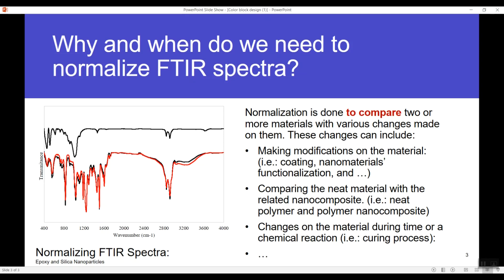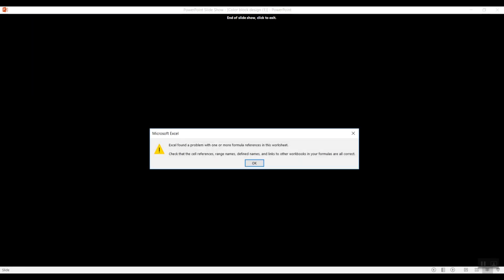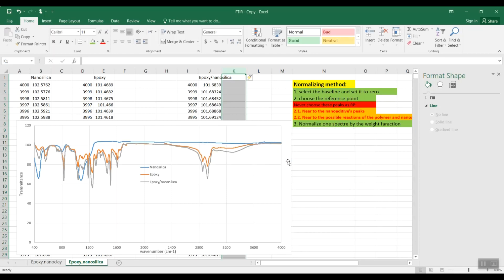For example, like the example we are going to face with here — if you want to compare the IR spectra of the neat epoxy and nano-additive related epoxy, which is nano silica added epoxy. Also, when you want to compare changes that have happened on the material during time or during any chemical reaction — for example, when you want to compare the uncured epoxy FTIR with the cured one — it's better to normalize the FTIR as well.